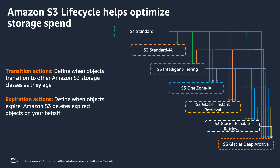This is how you can use Amazon S3 Lifecycle to optimize your storage spend. You can either transition objects from one storage class to another, or you can expire objects by using Lifecycle Management Policies to mark those objects for expiration, and then Amazon S3 deletes expired objects on your behalf.